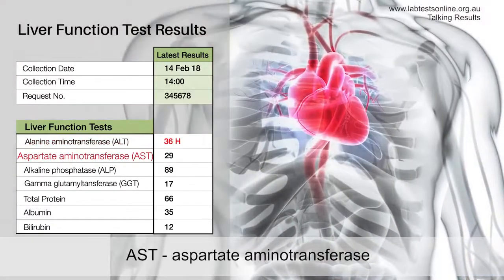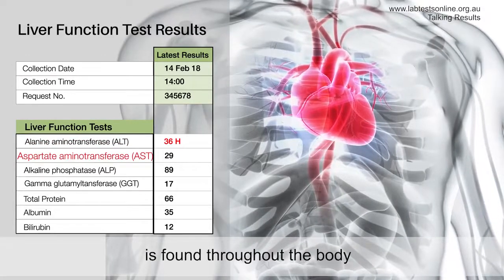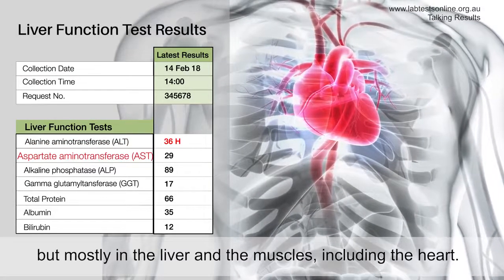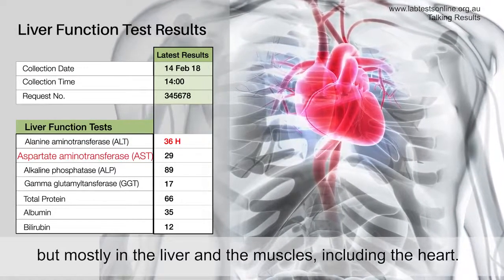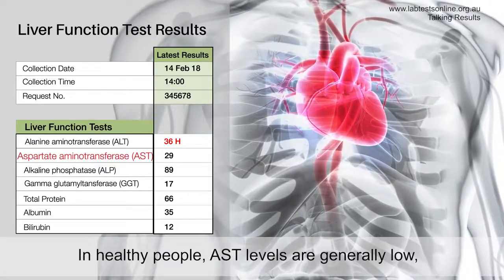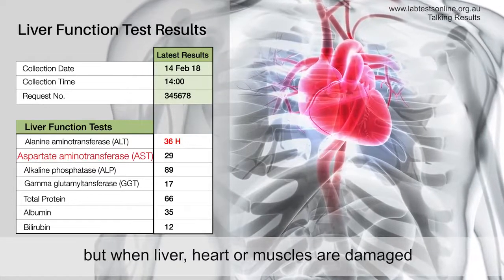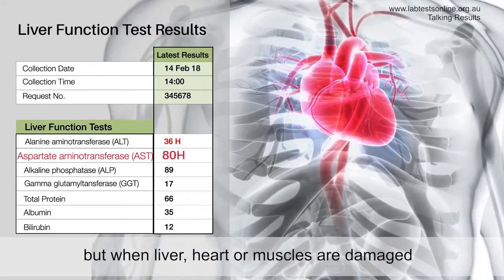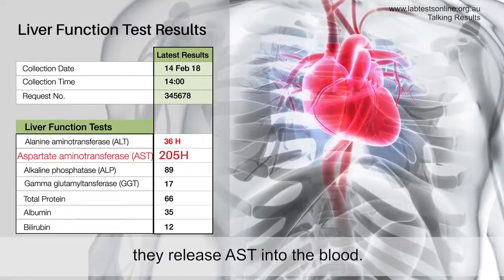AST, aspartate aminotransferase, is found throughout the body but mostly in the liver and the muscles, including the heart. In healthy people, AST levels are generally low, but when the liver, heart, or muscles are damaged, they release AST into the blood.